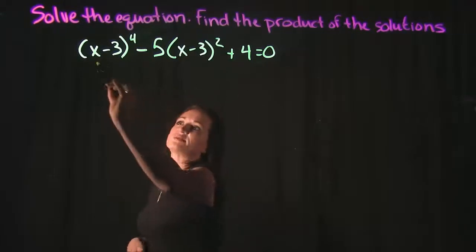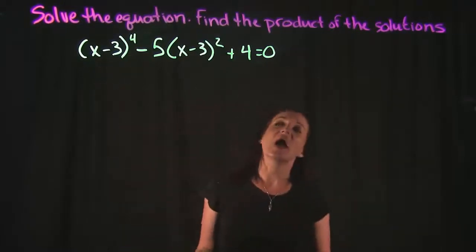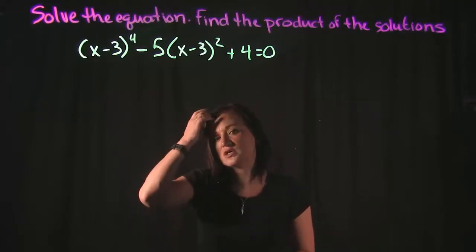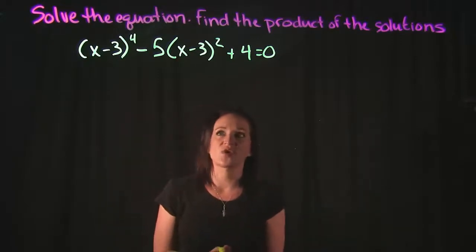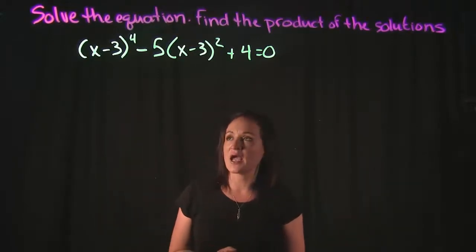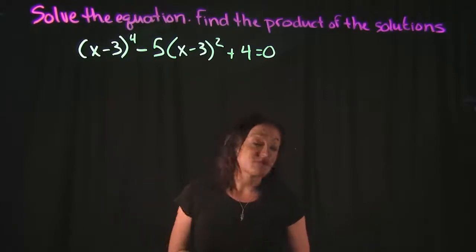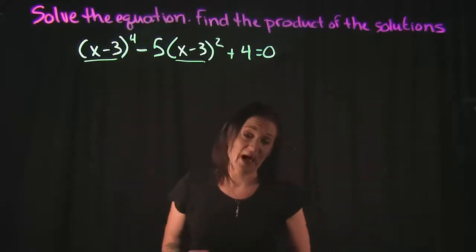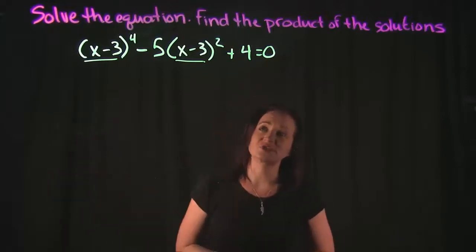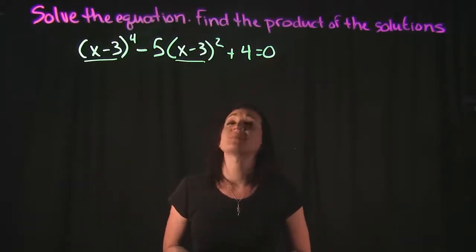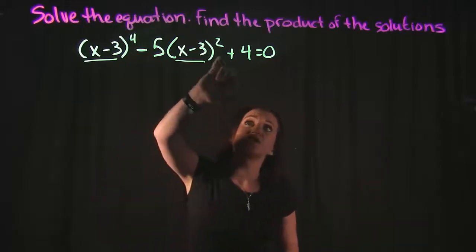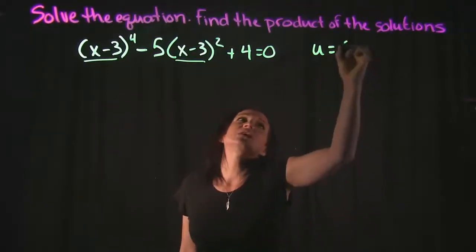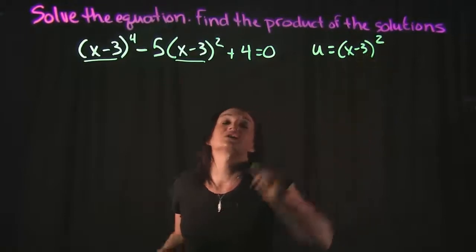Looking at each term, I have x minus 3 raised to the fourth and x minus 3 raised to the second. For u-substitution, we look for something in common — essentially a greatest common factor. Both terms share x minus 3: one raised to the fourth, one to the second. We always go with the one raised to the lowest power, which is the second power.